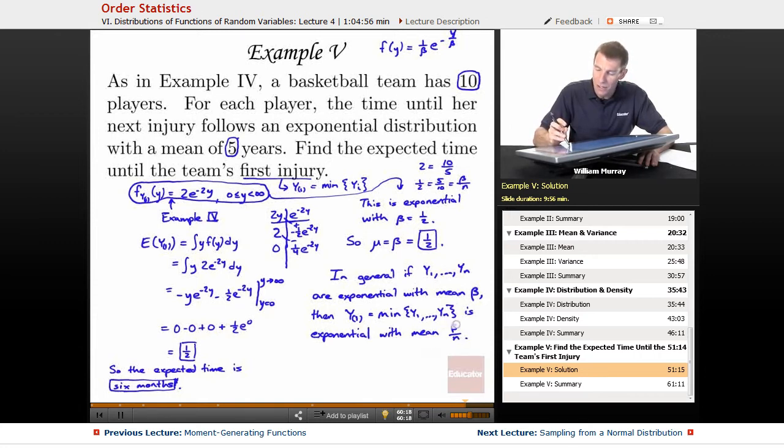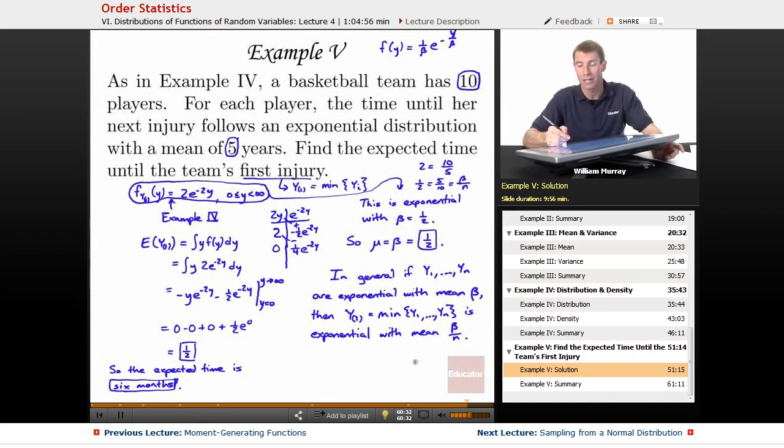That is not too surprising if you think about this basketball player example. If I have 10 players, on average each one gets injured every five years. So, if I'm sitting around waiting for one of them to get injured, which I hope I'm not, but maybe I'm the team doctor and I'm wondering when I'm going to have a job to do, on average if there's 10 people each one getting injured every five years, on average you're going to have one getting injured every half year. So, that's really not surprising, that's just 5 divided by 10.